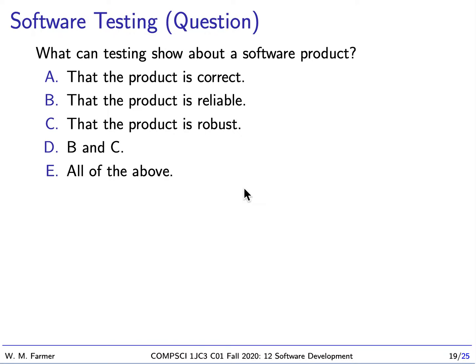So I have a question for you. What can testing show about a software product? You have five choices: that the product is correct, that the product is reliable, that the product is robust, B and C, or all of the above.